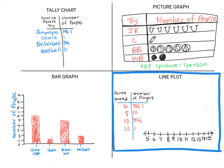Even though nobody scored seven points, I'm still going to include seven on my line plot because this is a number line and I need to include the numbers that are between there as well. I'm going to use X's above each number to show how many people scored that number of points. Over six, I put six X's. Over eight, I put three X's. I try to make my X's about the same size so the third X on this column lines up with the third X on other columns. For ten, five X's; for twelve, one X. I can see that most people scored six or ten points, and only one person scored twelve.